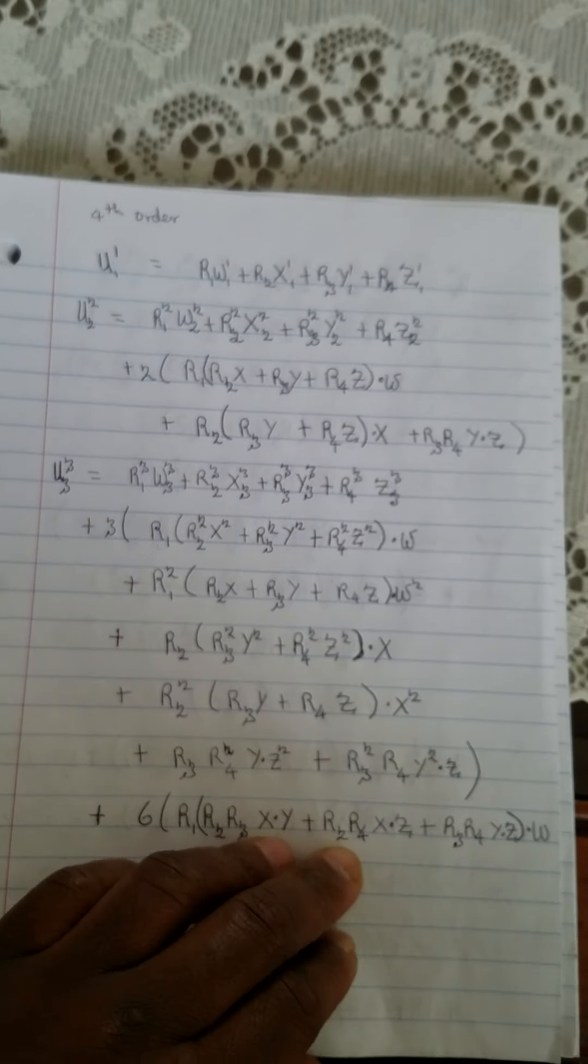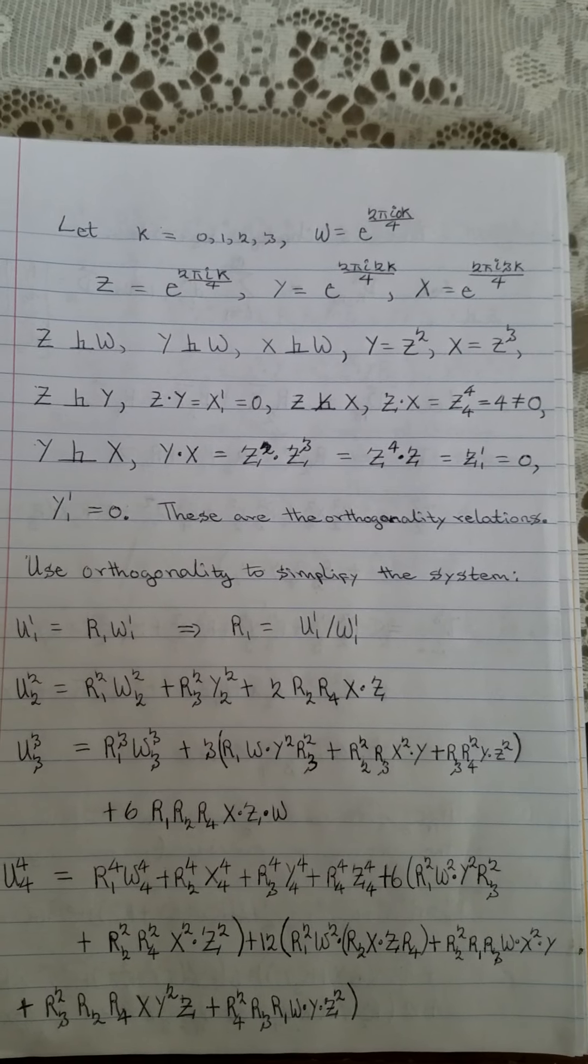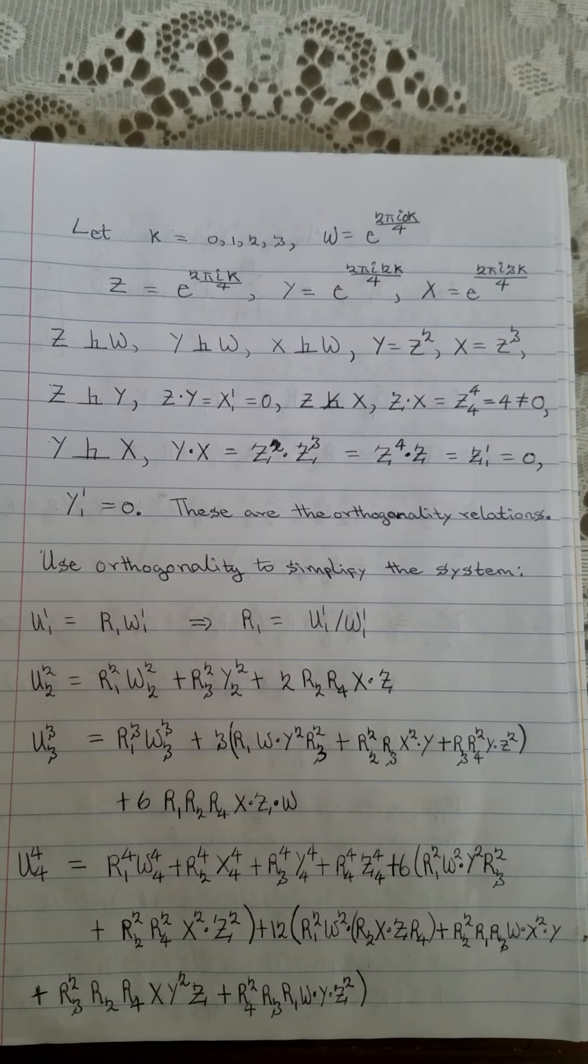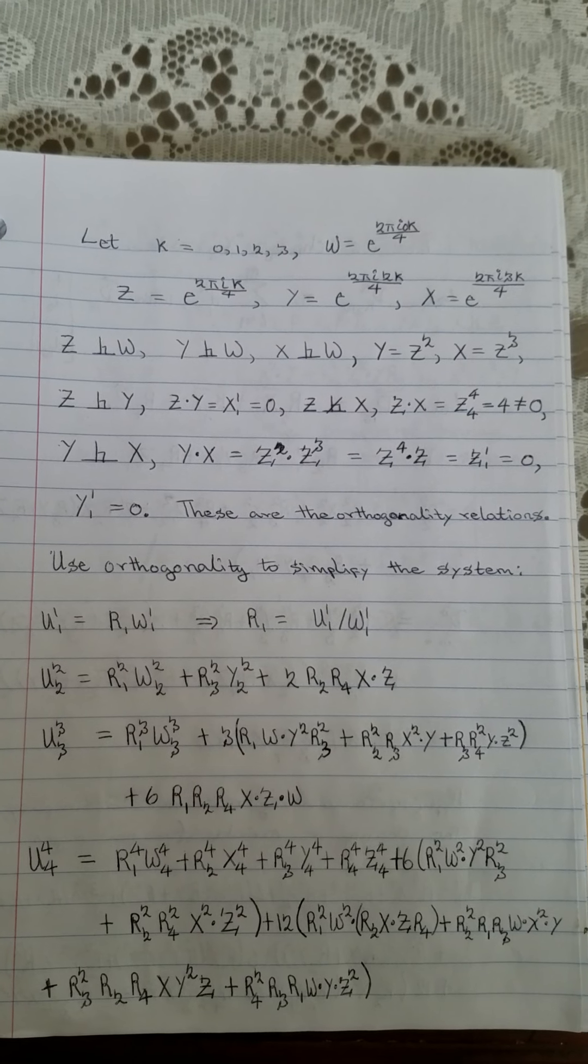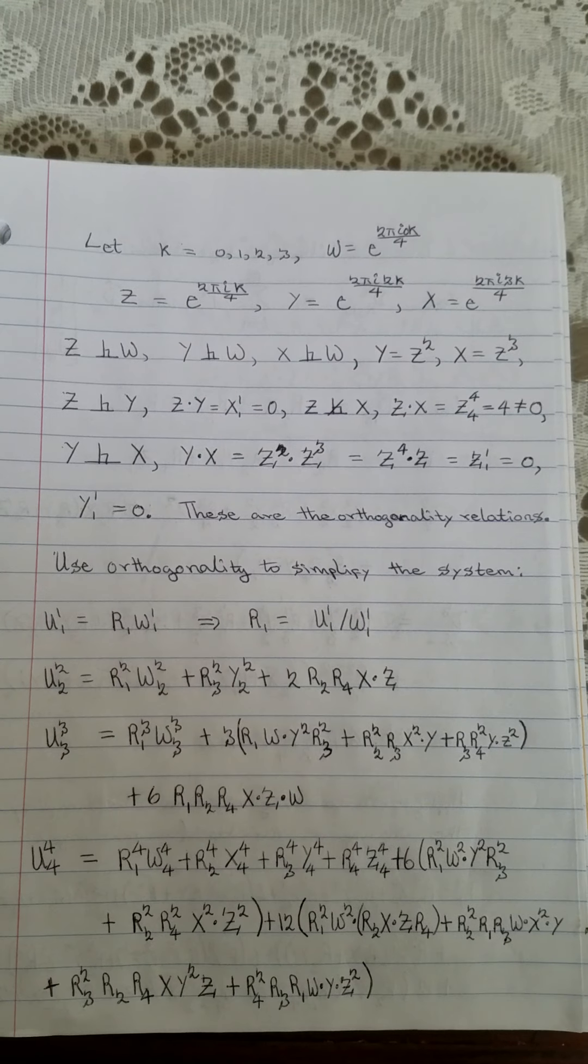Over here, with the choice of vectors for w, x, y, and z, we have when they are orthogonal and give a zero product and when they are not.